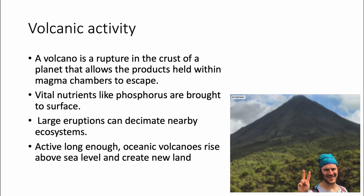One really good thing about volcanoes is that they release nutrients. Phosphorus is a limiting nutrient — there's only so much on the planet and we can't synthesize it. We have to mine for it or use animal byproducts. One way the Earth actually gets more phosphorus is through volcanic eruptions, because phosphorus is usually found deep in Earth's crust and mantle, and with an eruption these phosphorus pools enter the terrestrial habitat.